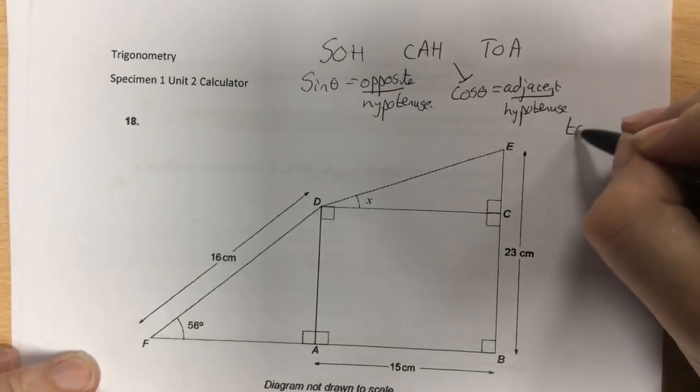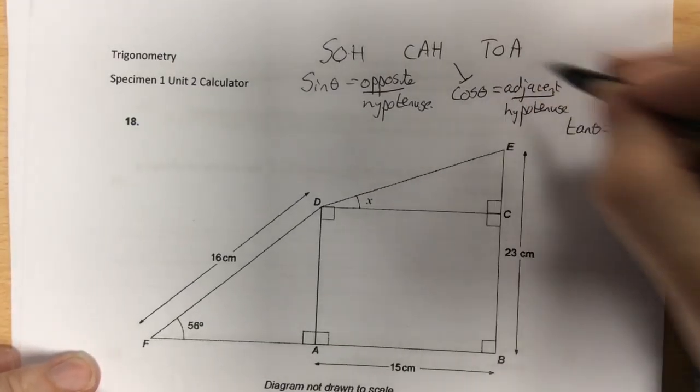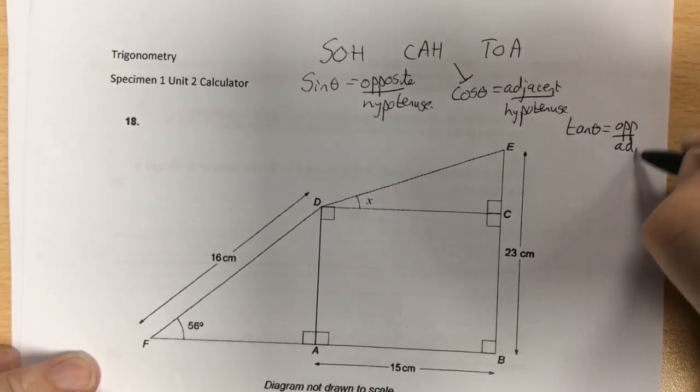And the last one, TOA. T for tan of the angle, O for opposite, over A for adjacent.